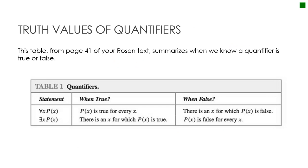To summarize: 'for all x, p of x' is true when p of x is true for every single x in the domain, but false if there exists even one x for which it is false. 'There exists an x, p of x' is true if we can find at least one x for which p of x is true, and false only if it is false for all x's. You can see how they are sort of opposites of one another.